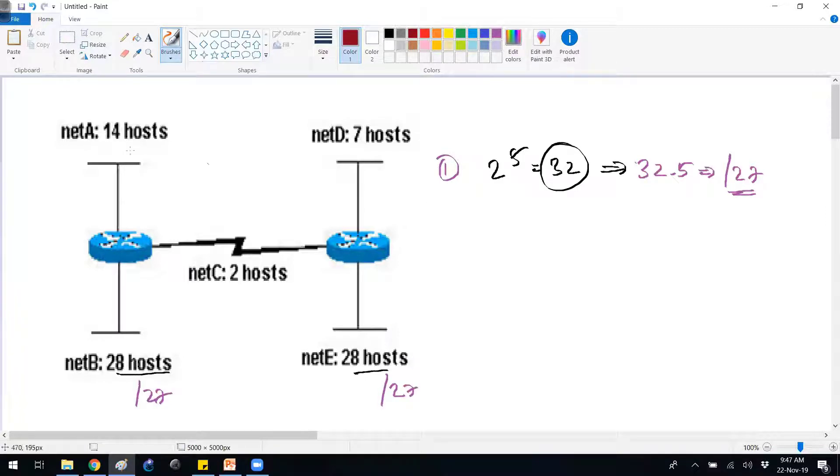The next requirement is 14, so 14 means 2 to the power of 4. I can use 16 as the possible size; 16 minus 2 equals 14. From 32, if I subtract 4, it's going to be /28. I'll be using /28 here. Range will be decided later.